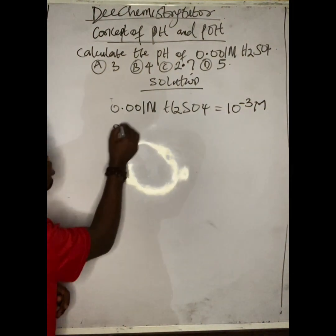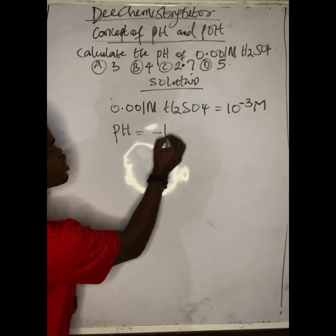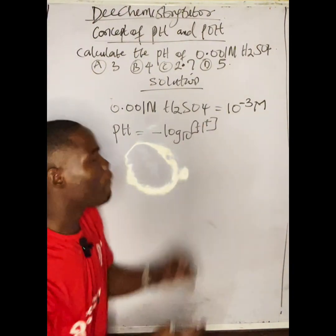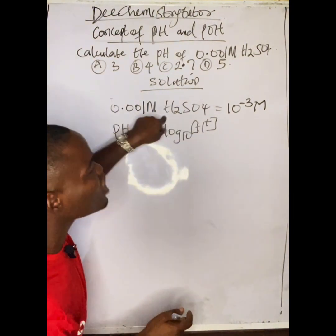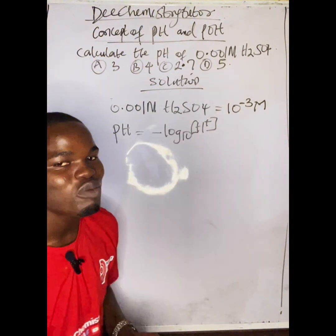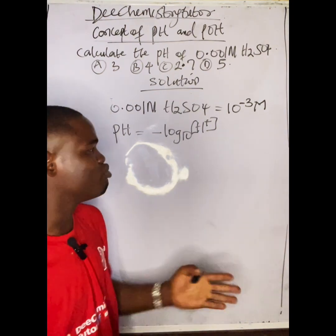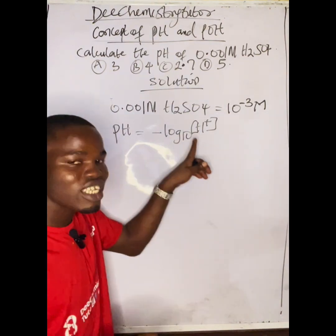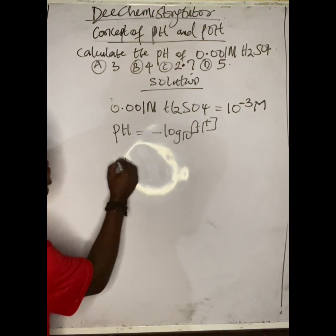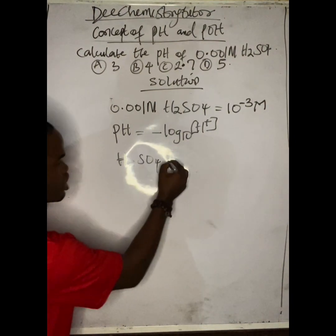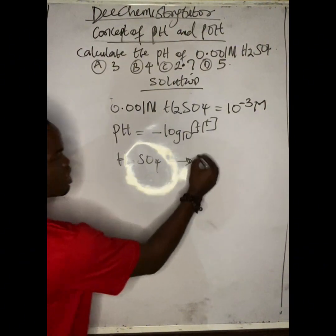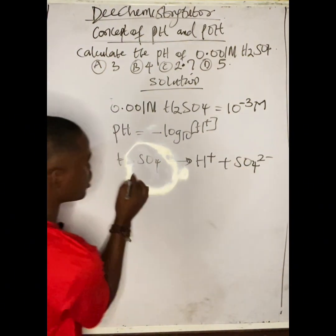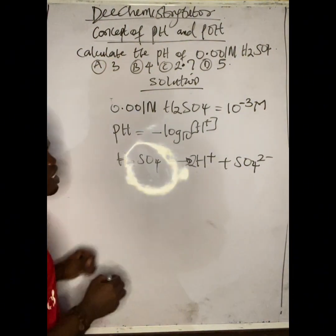Remember, pH is the negative logarithm to base 10 of the concentration of H⁺ — not of H₂SO₄. That is where most people go wrong and get pH = 3, but that is incorrect. When H₂SO₄ dissolves in water, it dissociates to give 2H⁺ plus SO₄²⁻. Because of the coefficient 2, we get two moles of H⁺.